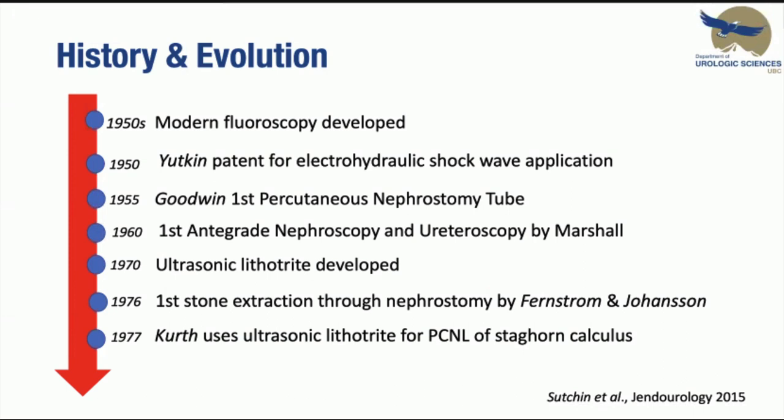He left a tube to drain the kidney, thereby placing the first nephrostomy tube. Ultrasonic lithotrite was developed in 1970. By 1976, Fernstrom and Johansson were the first to describe a technique for extracting renal calculi through a percutaneous nephrostomy under radiological control. Instruments used included the Dormia basket placed through a selector device and Randall's forceps used under fluoroscopy for stone extraction.